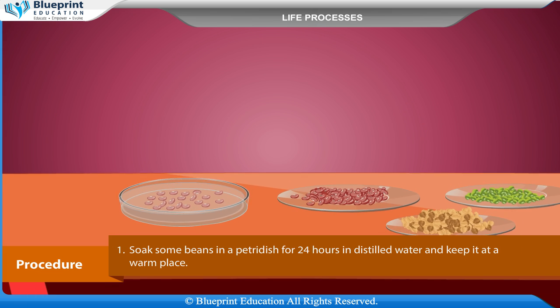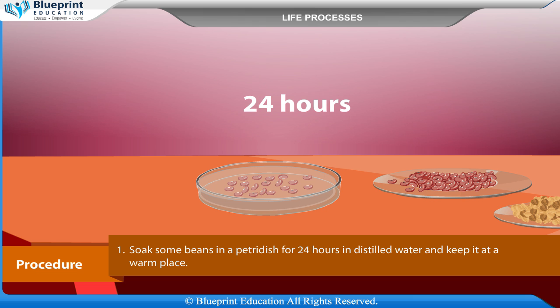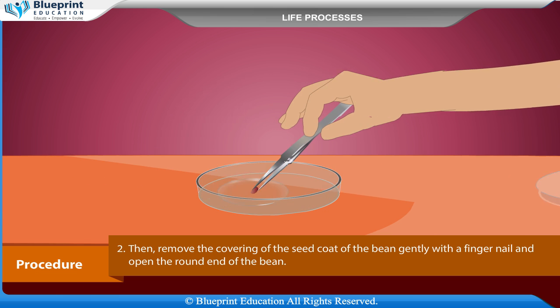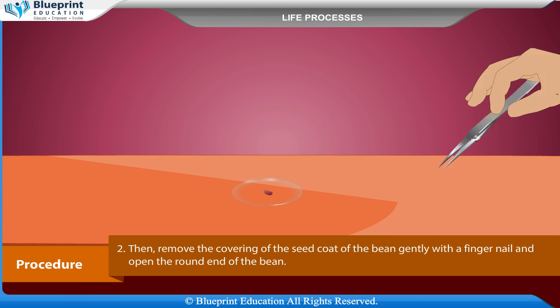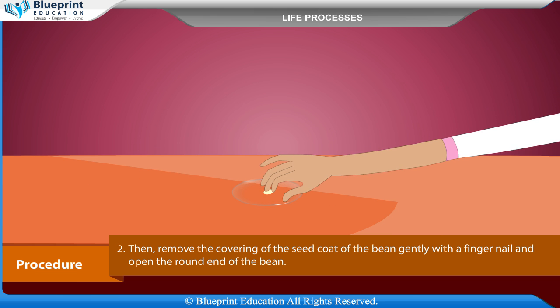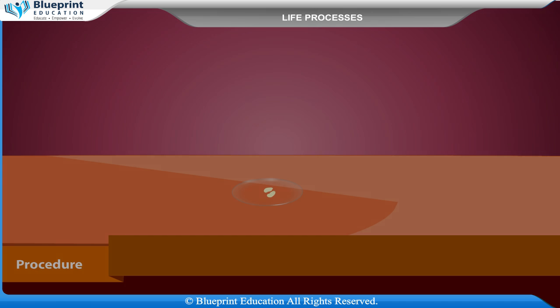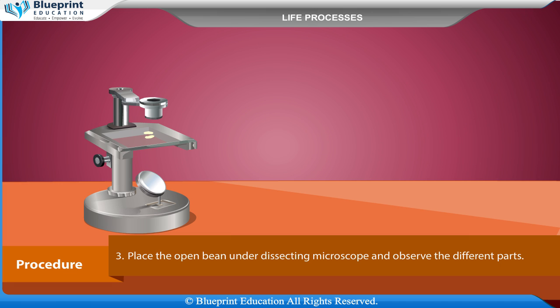Procedure: Soak some beans in a petri dish for 24 hours in distilled water and keep it in a warm place. Then remove the covering of the seed coat of a bean gently with a fingernail and open the round end of the bean. Place the open bean under a dissecting microscope and observe the different parts.